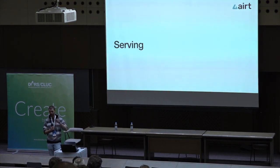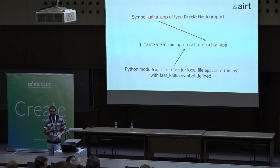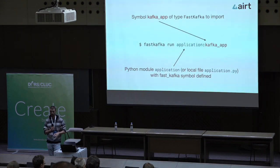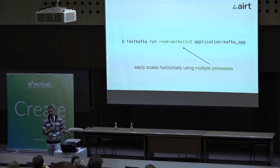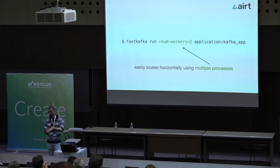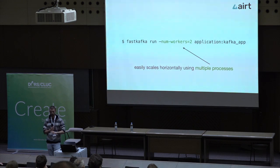Now your application is complete, documented, and tested — you want to serve it. You have the fast-kafka-run command. You pass it the module where your application is located and the name of the symbol where your Kafka app is saved. It takes care of everything in the background. You can define how many worker processes you want — so you don't need to worry about Docker or spinning up multiple consumers. Just define the number of workers and the run command spawns multiple clones of your application in the background.